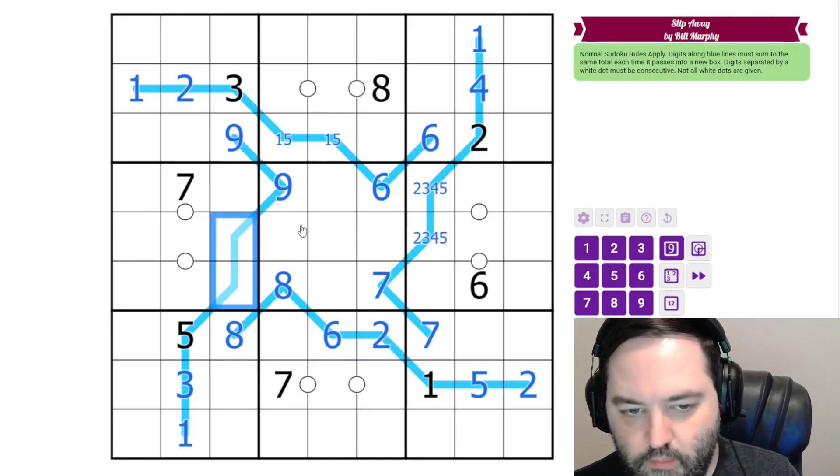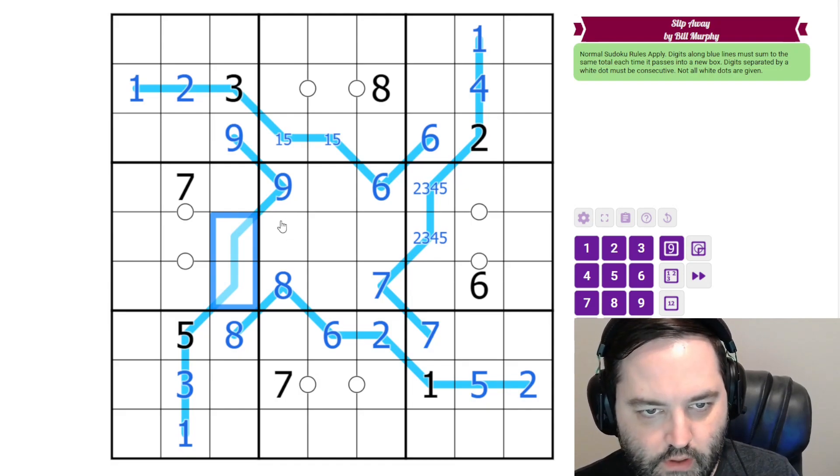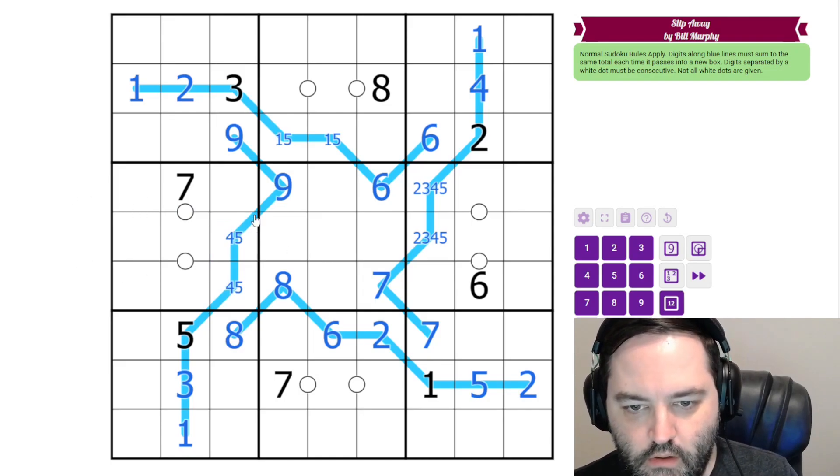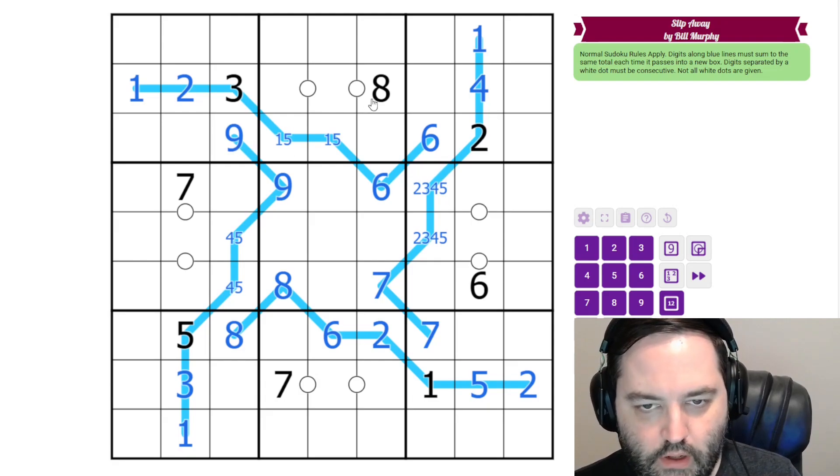And these 2 cells sum to 9, which there are 4 possibilities for that, but 3 of them are ruled out. We can't have 3, 6. We can't have 2, 7. We can't have 1, 8. So this is 4, 5. I think that's about all we can do just with the lines for now. So let's look at the consecutive pairs.